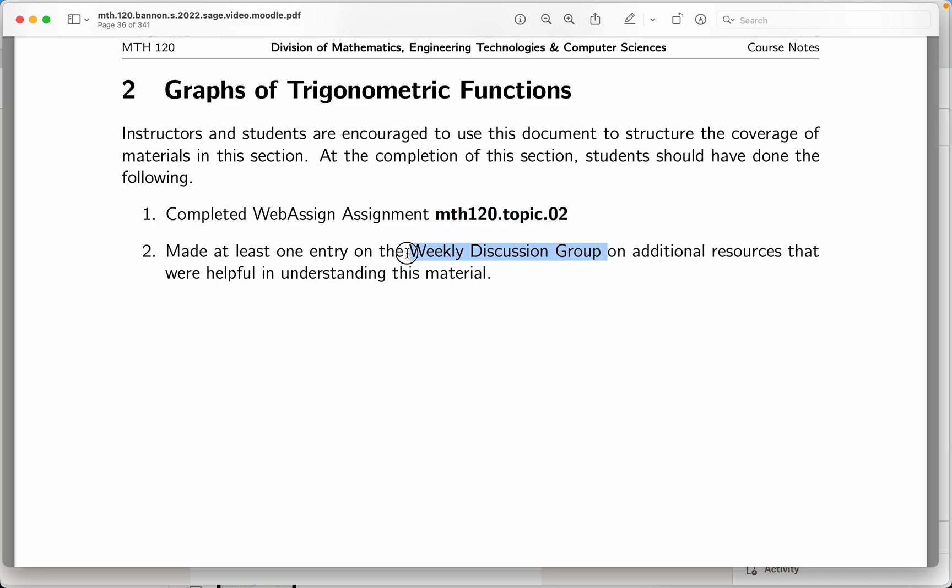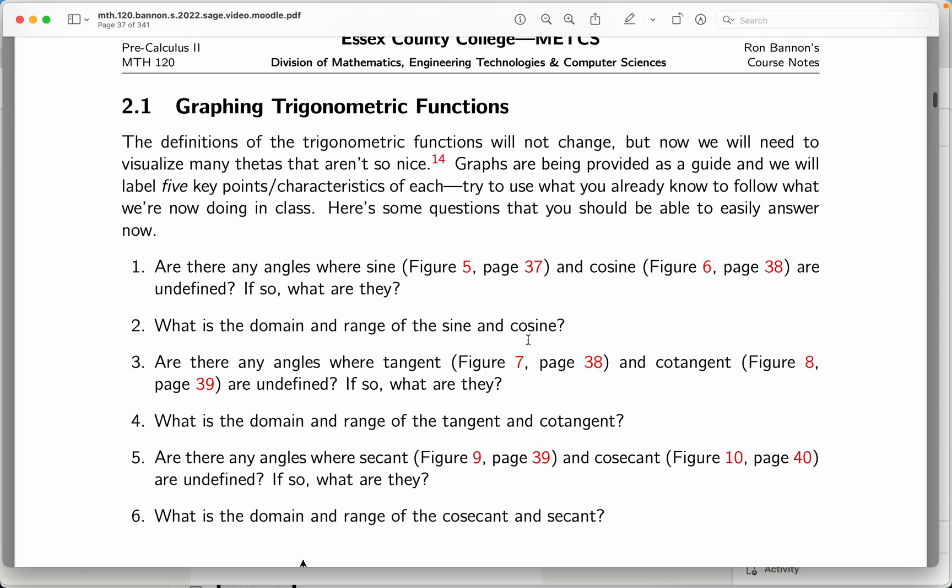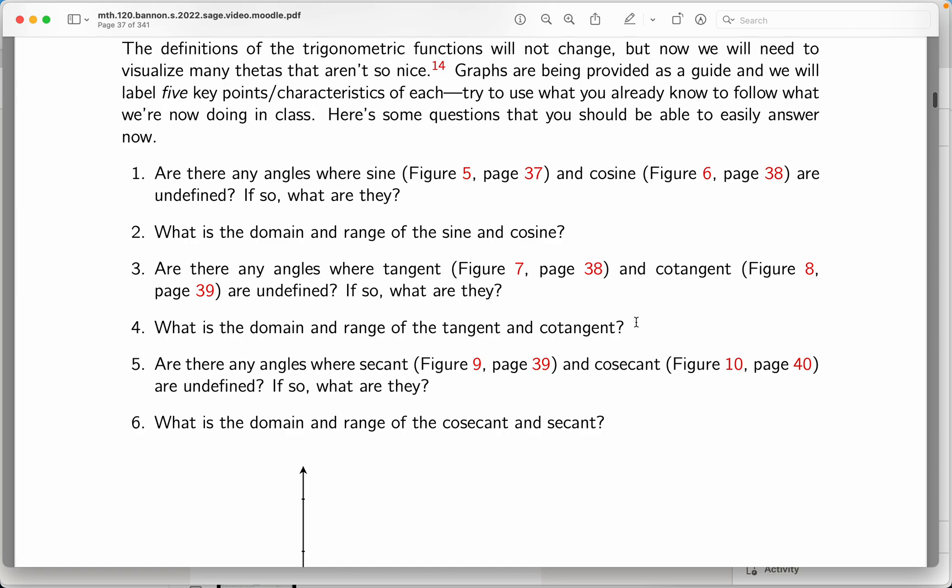This is the second section of the material. It says they should be able to complete the WebAssign Math 120 Topic 2 when they're done with Section 2 of this guide. It also mentions a weekly discussion group that could be done in a classroom or online. Whatever you feel comfortable doing. Let me go through the structure of it. The structure is pretty carefully done. Typically, there's going to be some lecture material to cover.